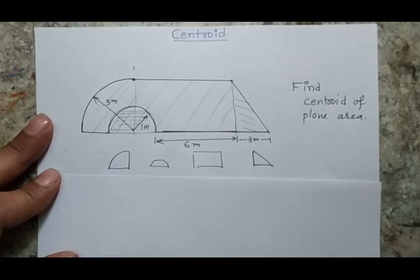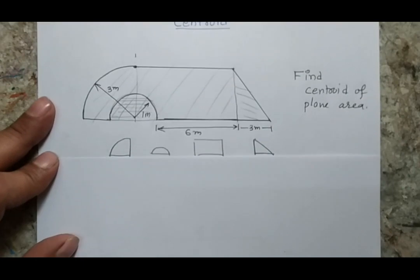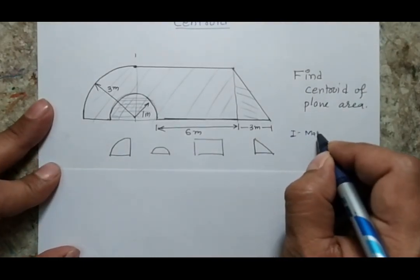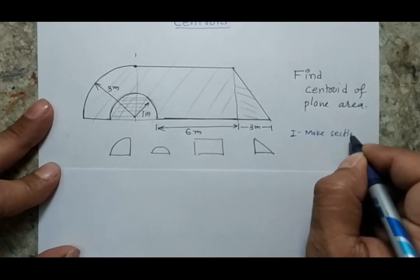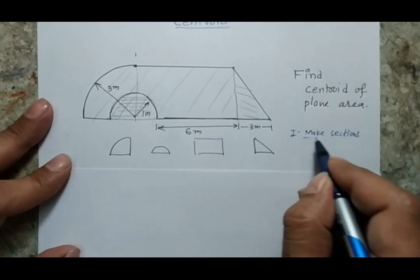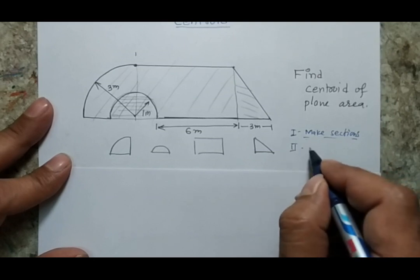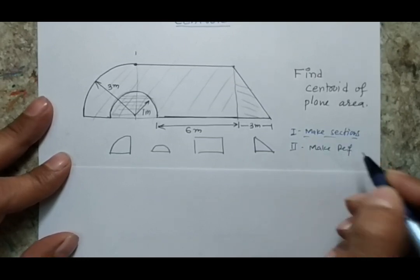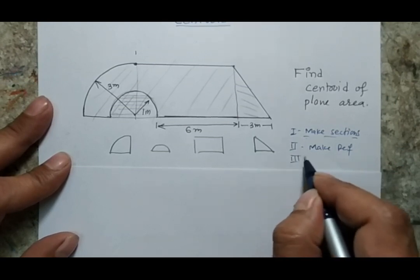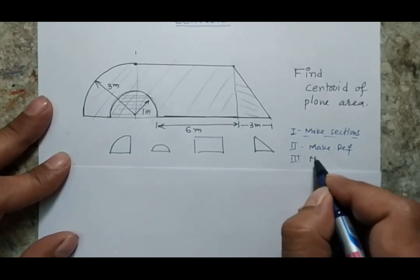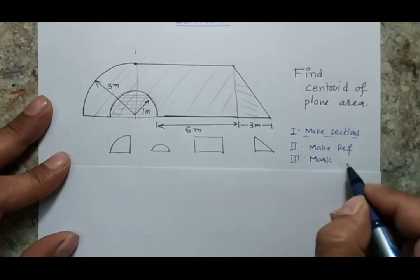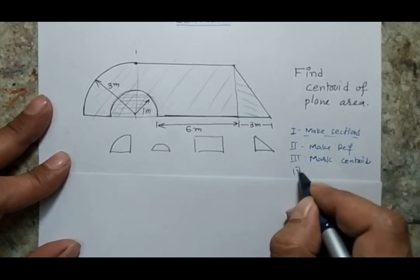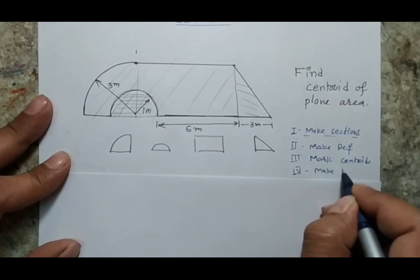As usual, I follow four different rules. My first rule says to make sections. My second rule says to make references. My third rule says to mark the individual centroid. And my fourth rule says to make a table.